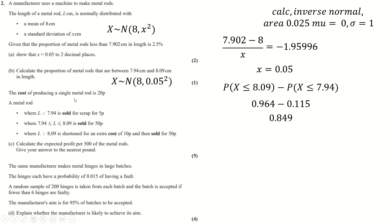And then it says here, the cost of producing a single metal rod is that. So if the rod is less than this, which has probability of this happening, then you sell it for scrap for this. If you're between these two, which has probability this, then you sell it for 50. And if you're bigger than this, which must have probability one minus this, which is 0.036, then you essentially make a profit of 40 pence.